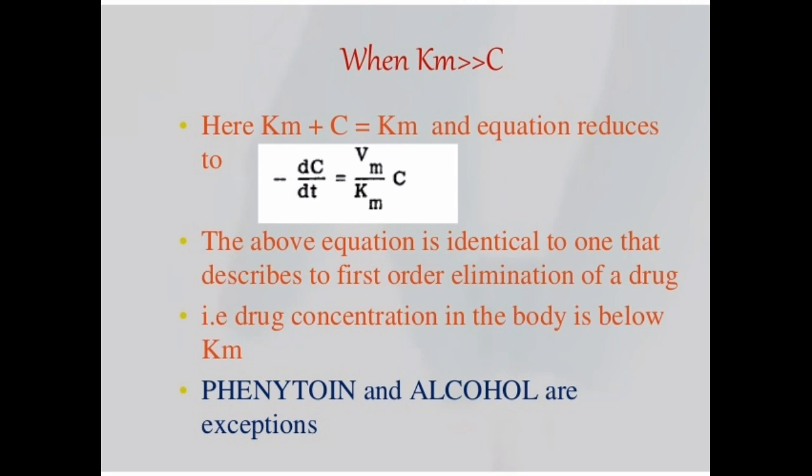In next case, Km is greater than C. Here minus dC by dT will become Vm by Km into C. The above equation is identical to one that describes the first order elimination of the drug, that is drug concentration in the body is below Km. However, phenytoin and alcohol are exceptions for this kind.